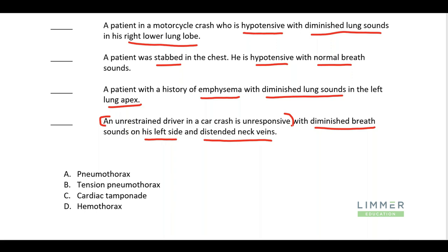Let's go through again now that we know the choices. The motorcycle crash patient is hypotensive — probably blood loss — and has diminished lung sounds in his right lower lung lobe. It's lower, so what goes into the lower lobes? Fluid, or blood. What's going to go to the base of the lung in that pleural space? We're going to find diminished lung sounds in the right lower lobe, so I'm going to say this is my hemothorax patient.